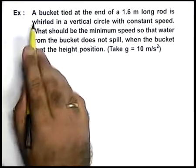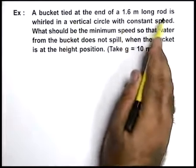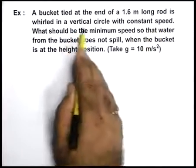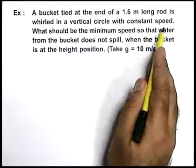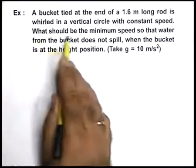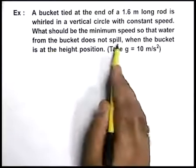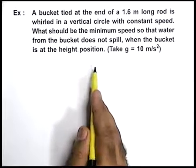In this example, we are given that a bucket tied at the end of a 1.6 meter long rod is whirled in a vertical circle with constant speed. We are required to find what should be the minimum speed so that water from the bucket does not spill when the bucket is at the highest position.